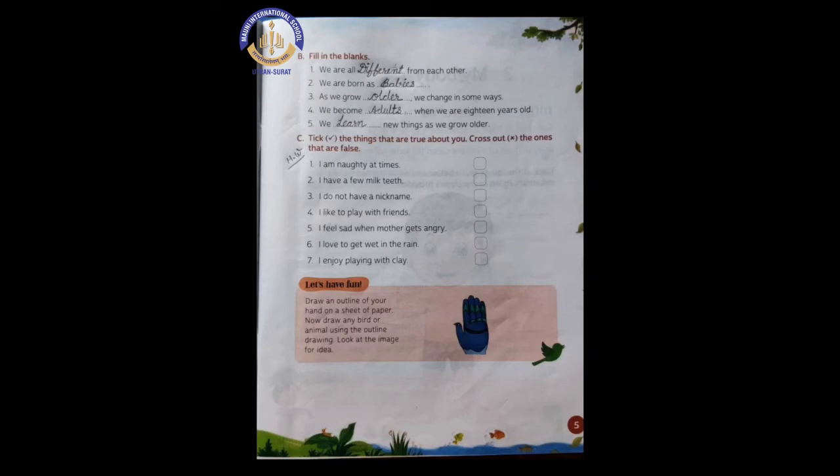Now number 4. We become dash when we are 18 years old. At 18 years age we are called adults. So the spelling of adults is A-D-U-L-T-S.